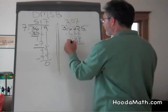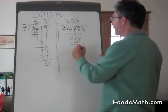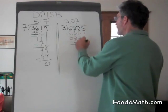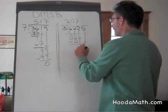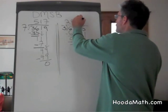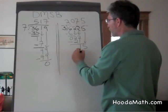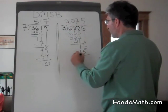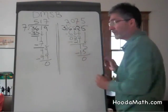We subtract. 22 minus 21 is 1. And bring down the 5. 3 divides into 15, 5 times. Multiply. 5 times 3 is 15. And subtract. And we have a remainder of 0.